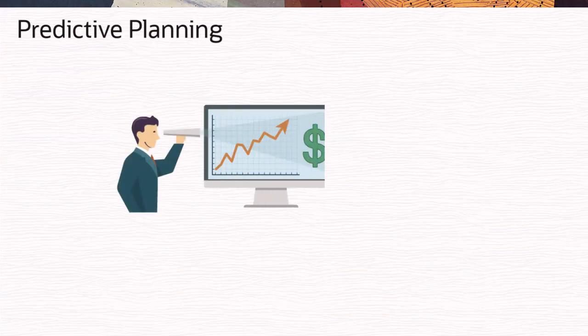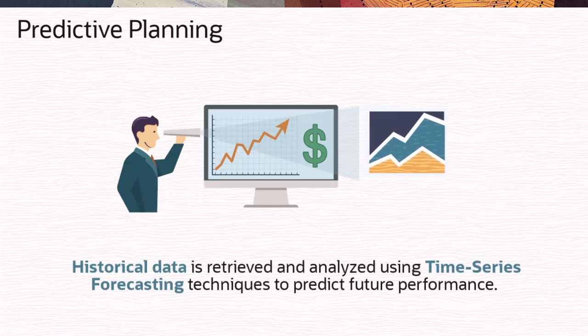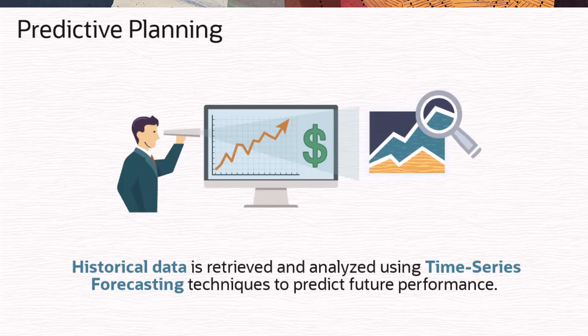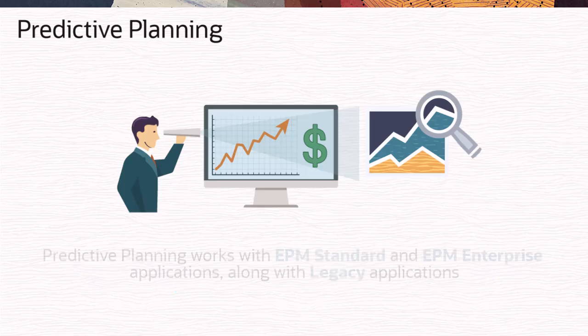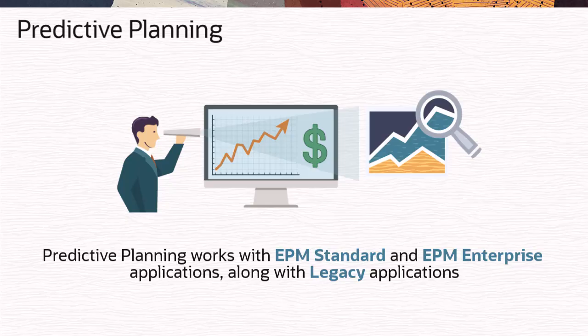With Predictive Planning in Oracle Cloud EPM Planning, historical data is retrieved and then analyzed using time series forecasting techniques to predict future performance and compare it with existing plans and forecasts. Predictive Planning works with EPM Standard and EPM Enterprise applications along with legacy applications.